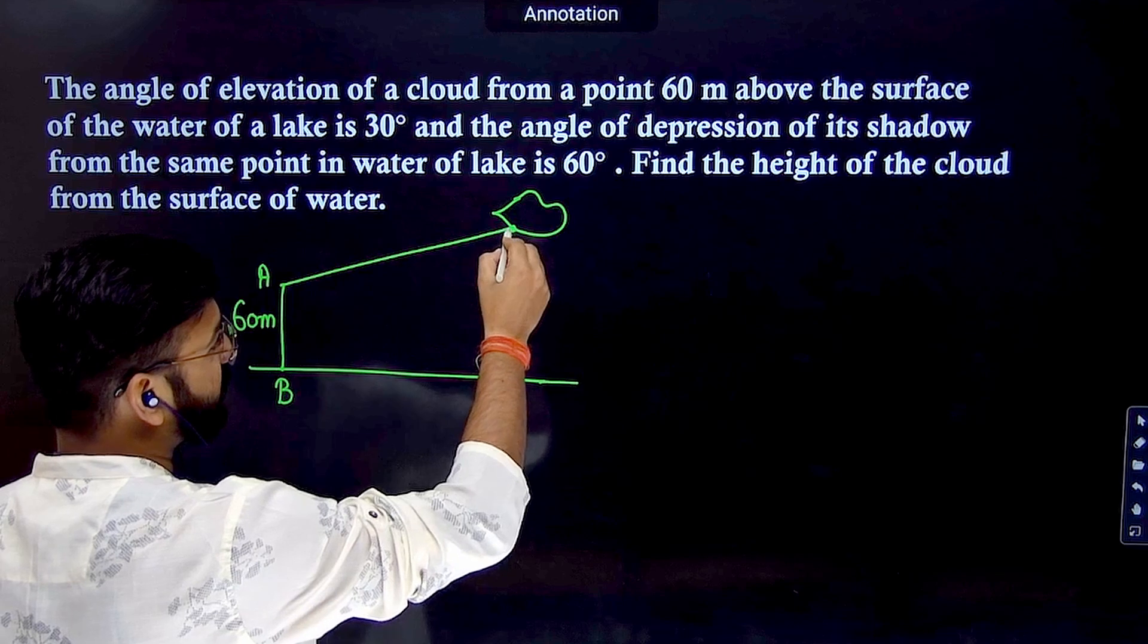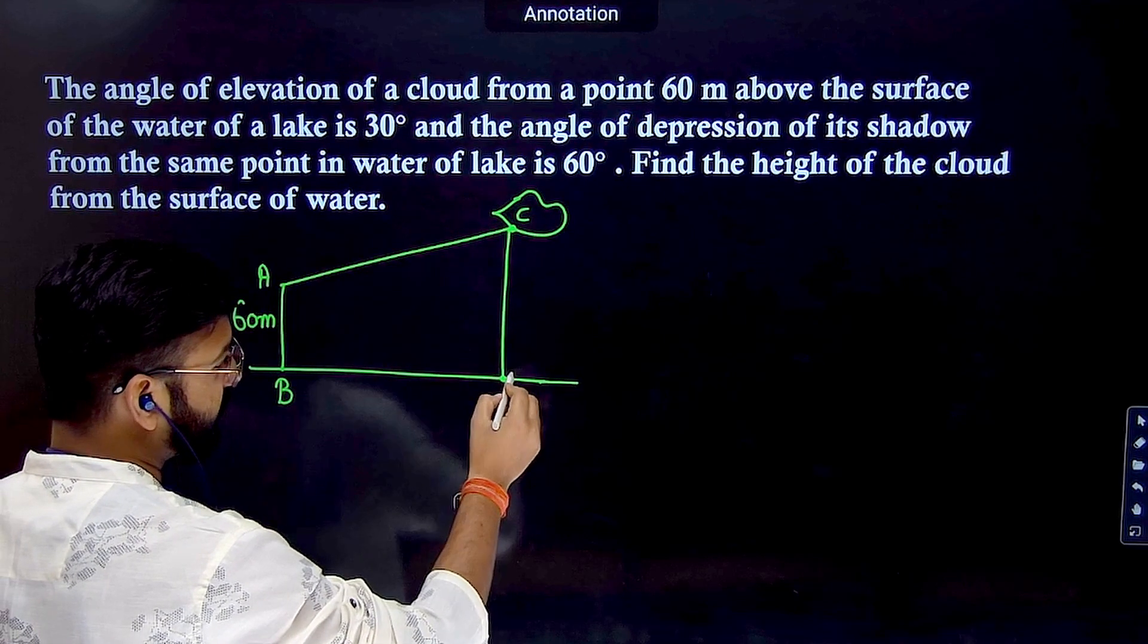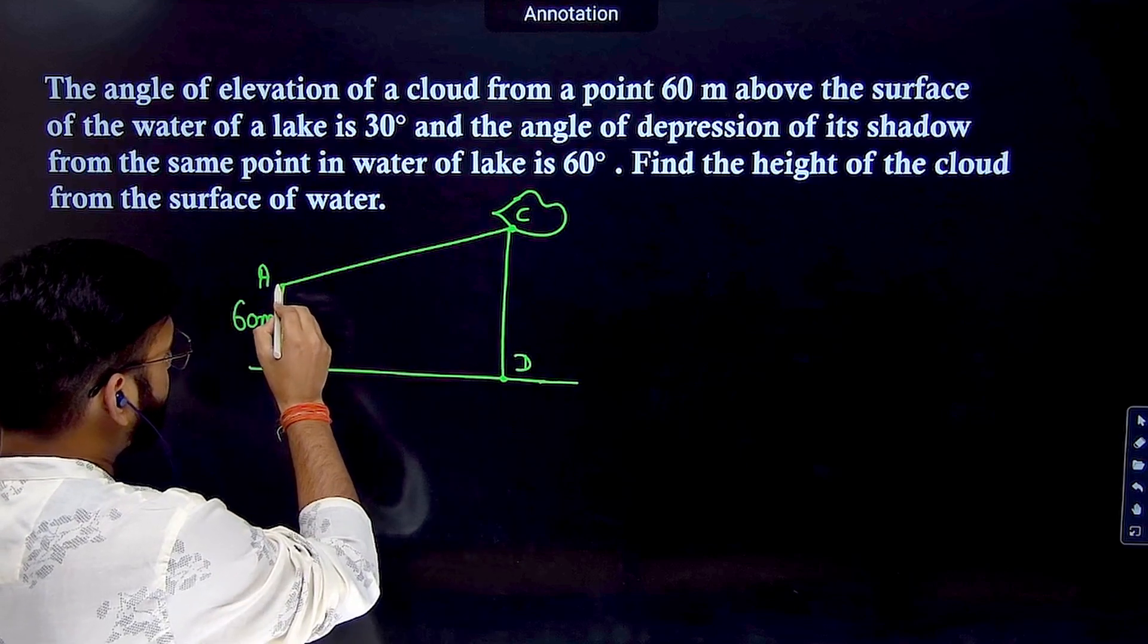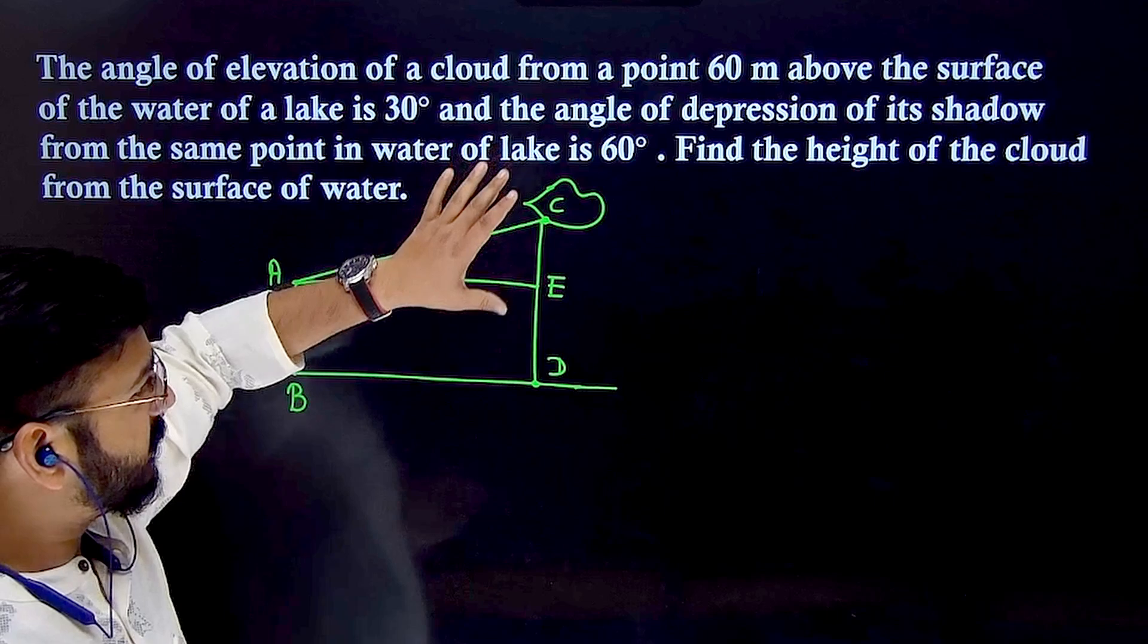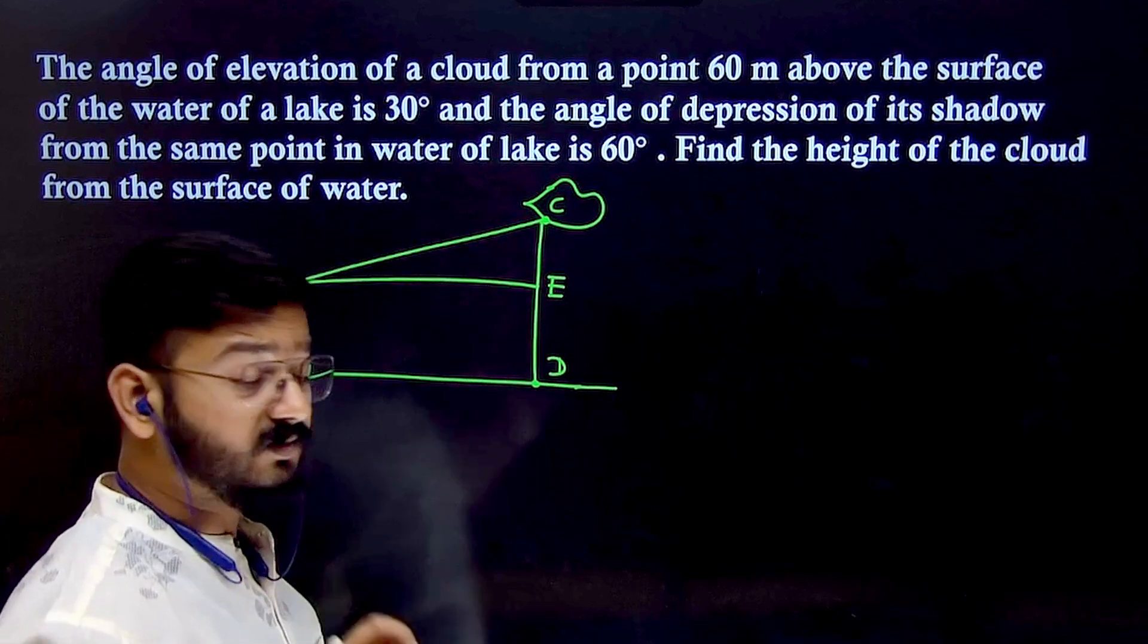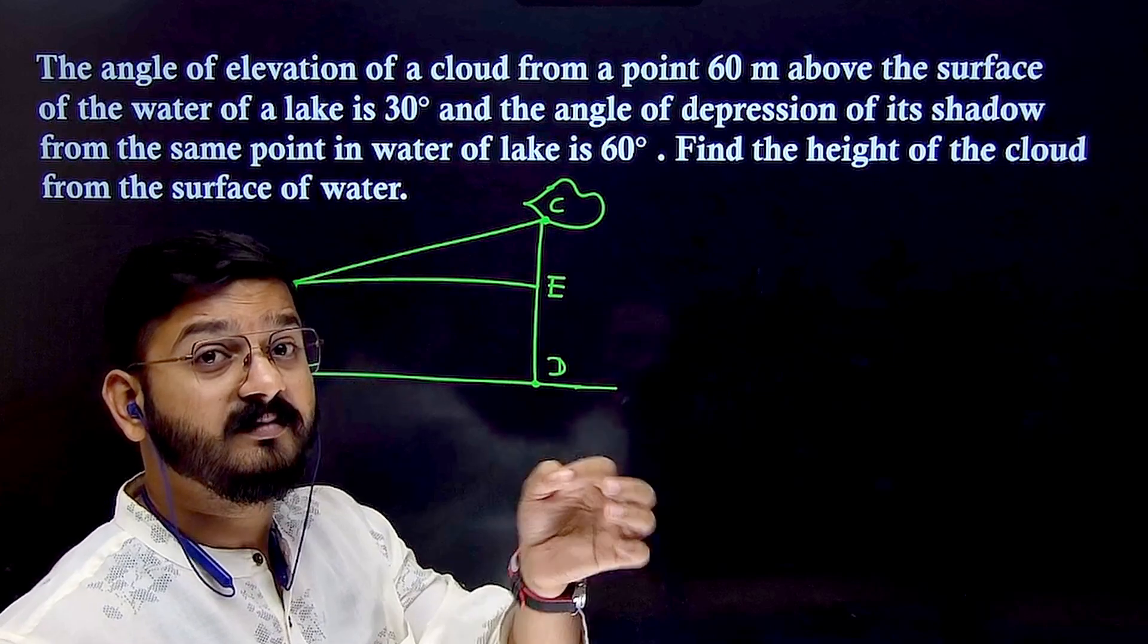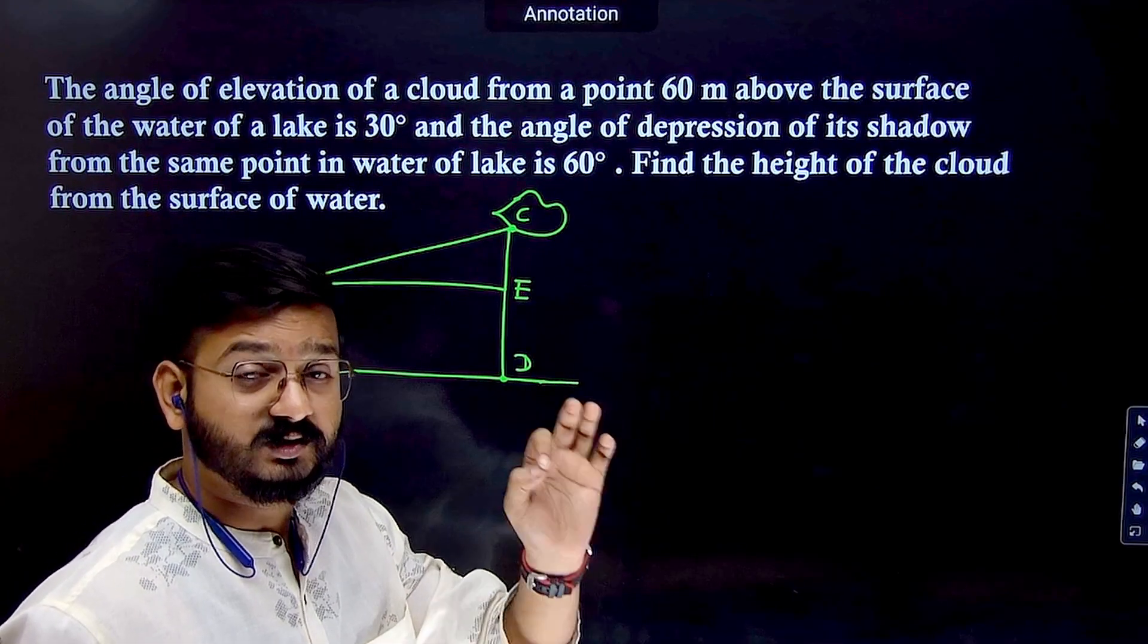Let's draw the cloud here. Mark this point as C. Join it to the surface of the lake at point D. Draw a line from A to D. The cloud is at a particular height from the surface of the lake. Now, take the surface of the lake as a plane mirror.